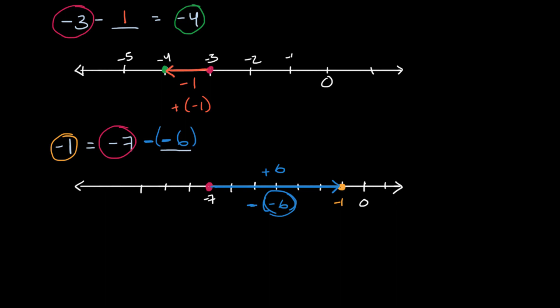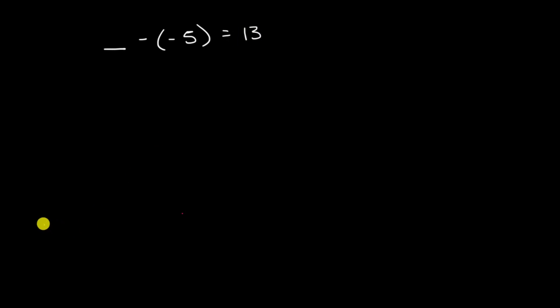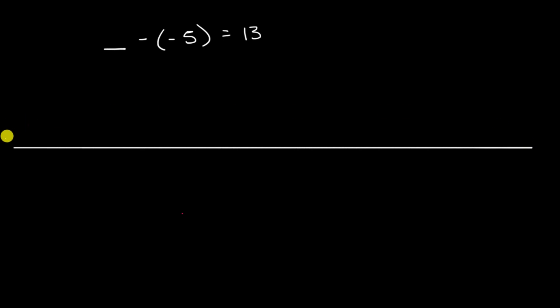Let's do another example. Let's say we wanted to figure out: blank minus negative five is equal to 13. How would you tackle that? Let me draw my number line again. I'm dealing with something that's gonna be roughly five away from 13.